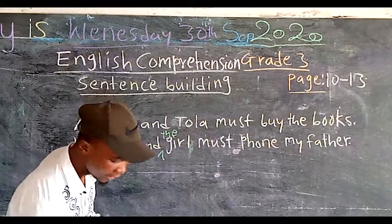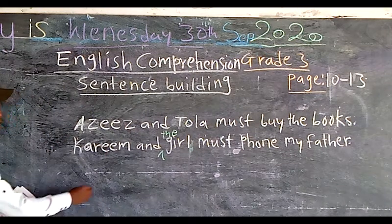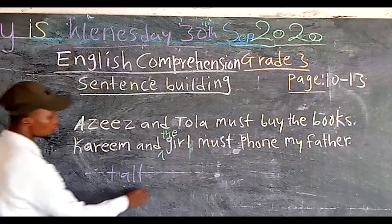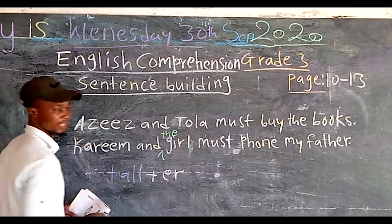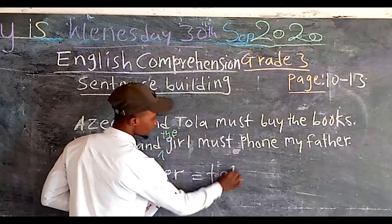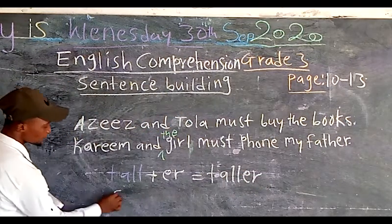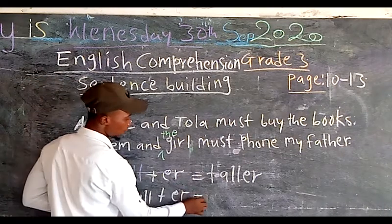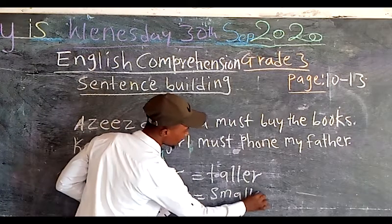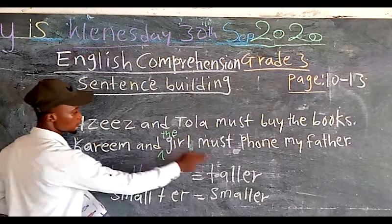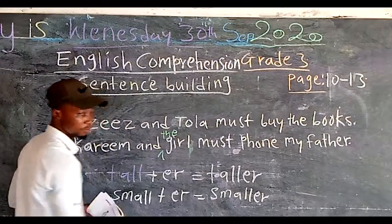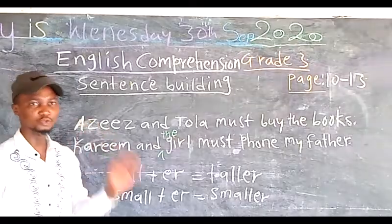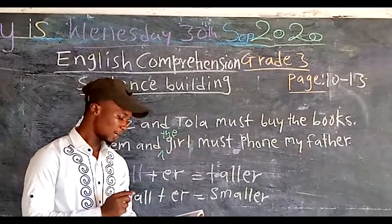Now this is guided writing. Under guided writing, you are going to make use of adjectives and adverbs. We have 'tall.' Given the comparative for tall, we add 'e-r,' so tall plus 'er' equals 'taller.' We have 'small' — it becomes 'smaller.' We are not going towards the superlative; we will stop at the comparative form.